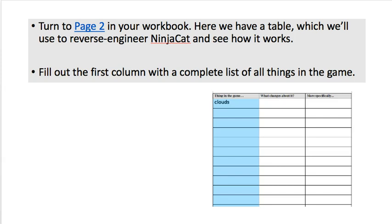Turn to page two in your workbook. You have a table that we'll use to reverse engineer - analyze Ninja Cat and see how it works. Fill out the first column in your notebook which says 'things in the game.' Flip over to where you were playing the game, and then in your workbook list all of the different things, the characters and images and those kinds of things in the game. Pause now and do that.